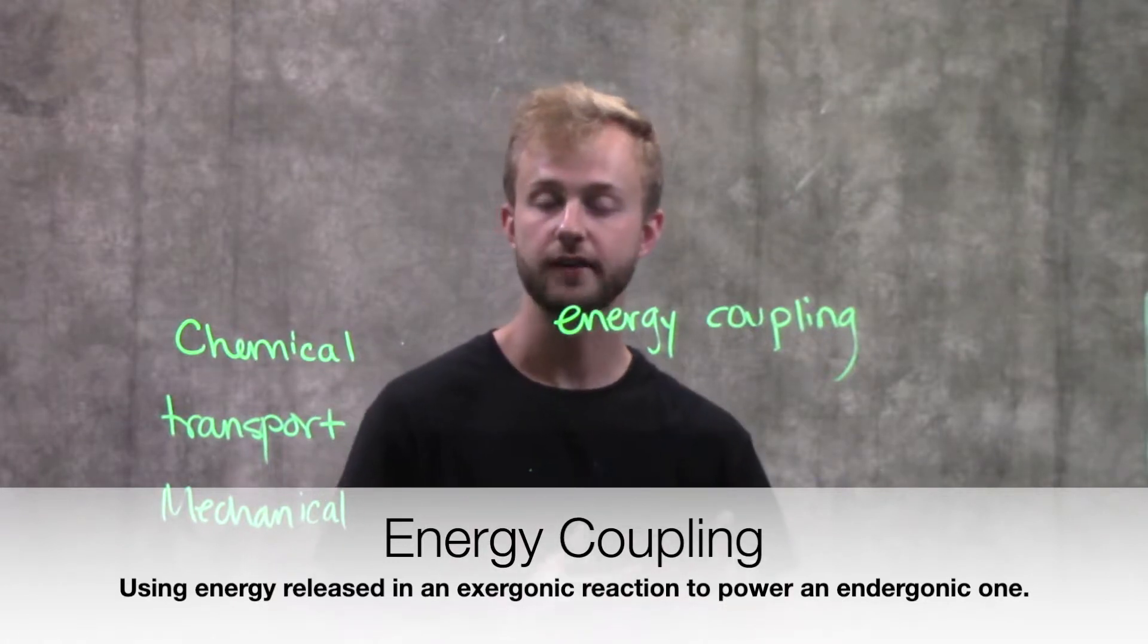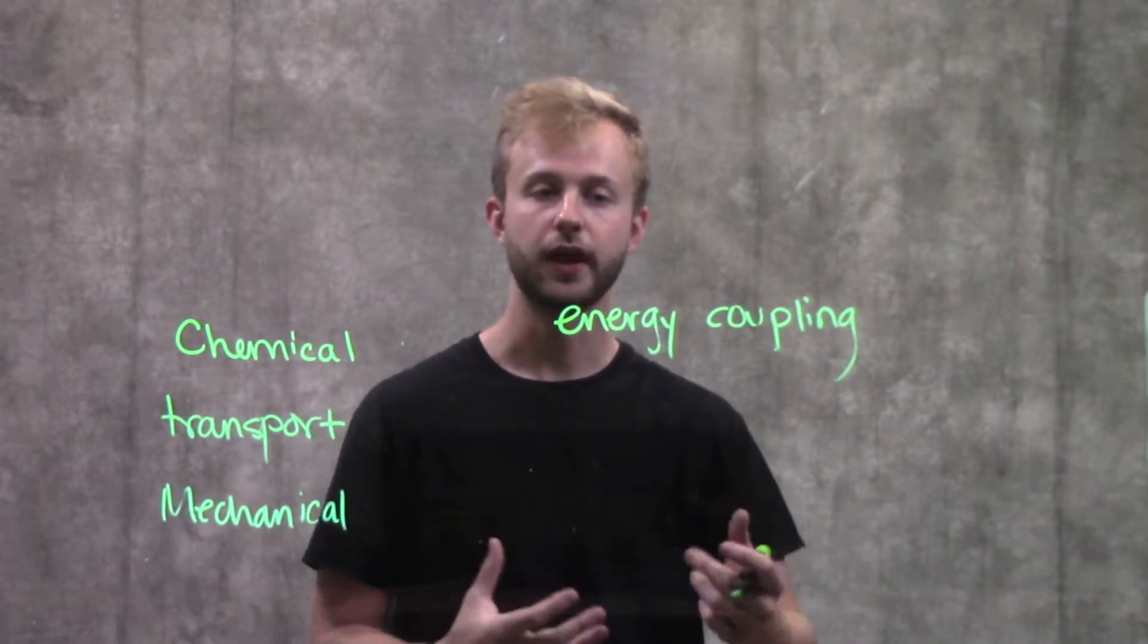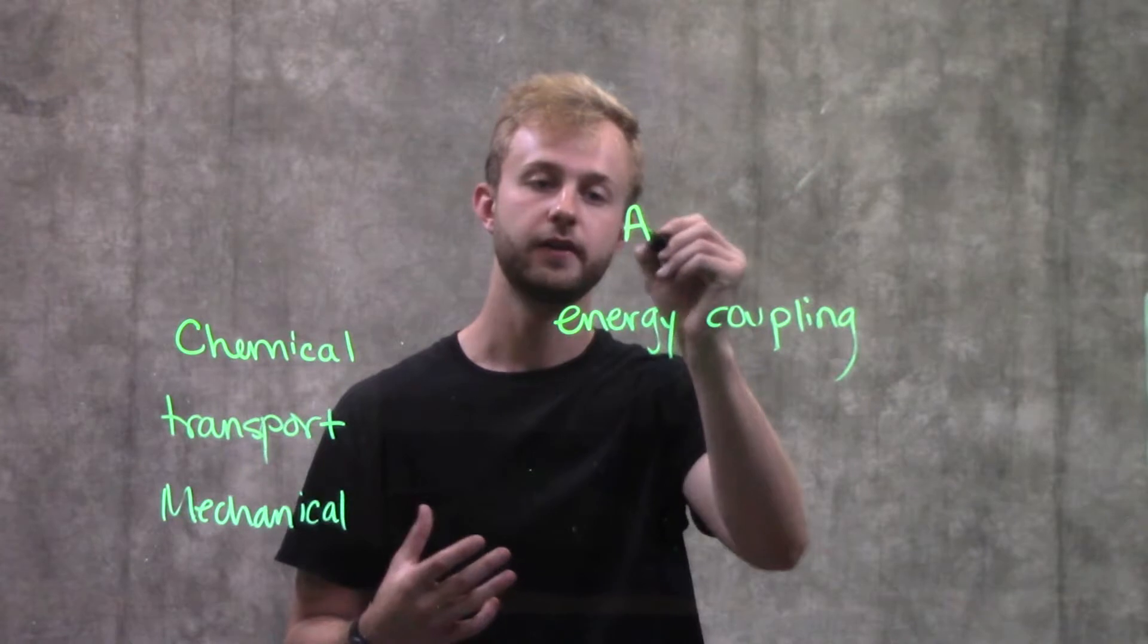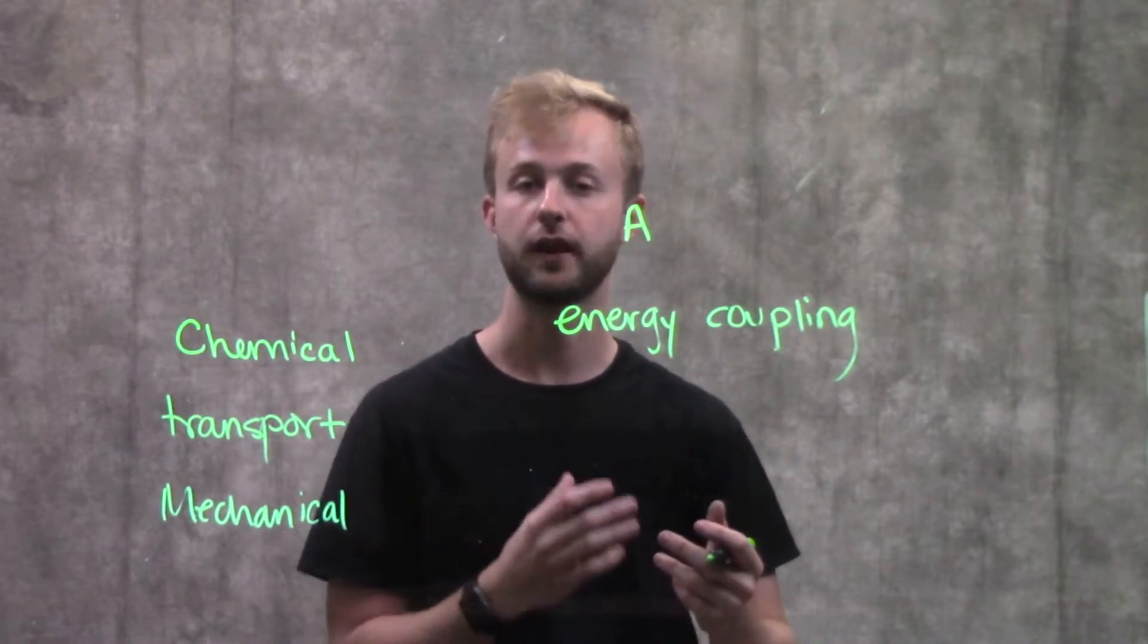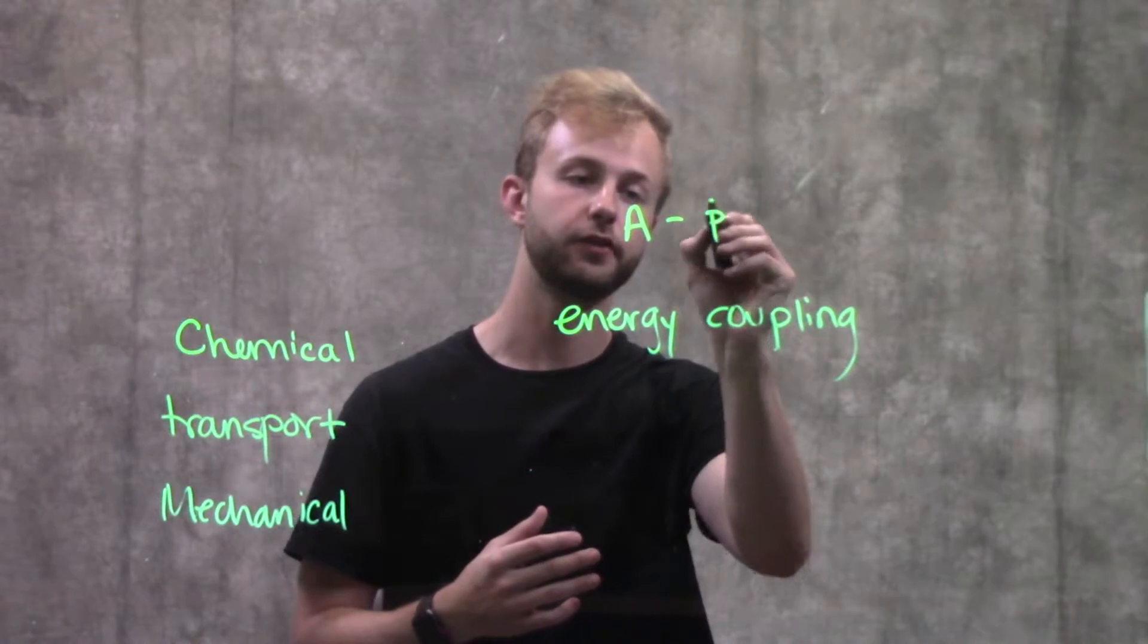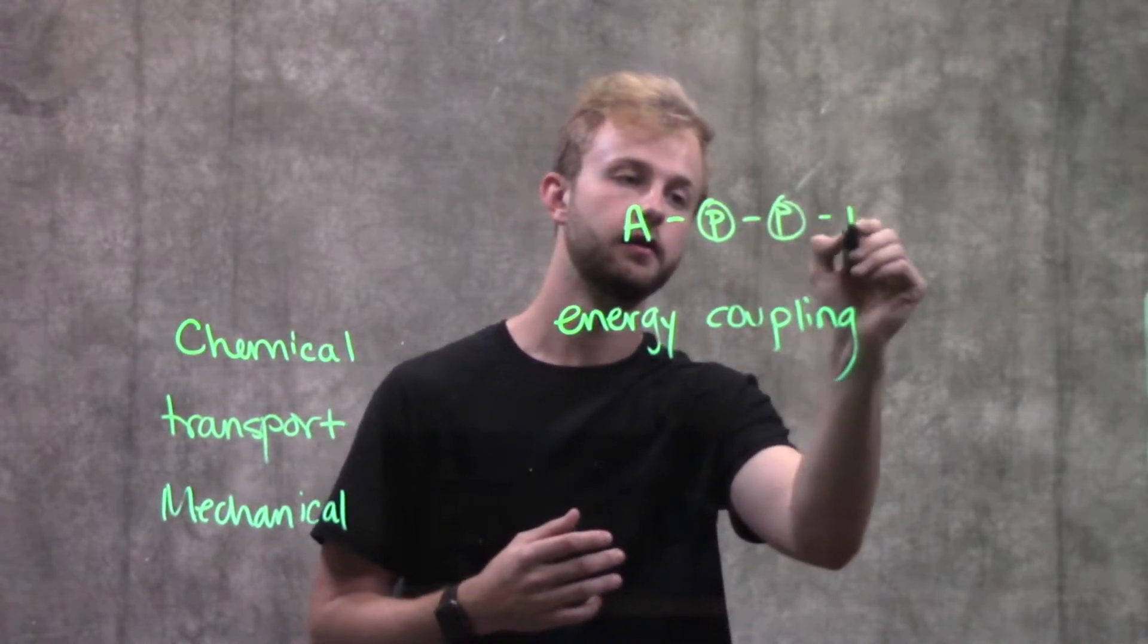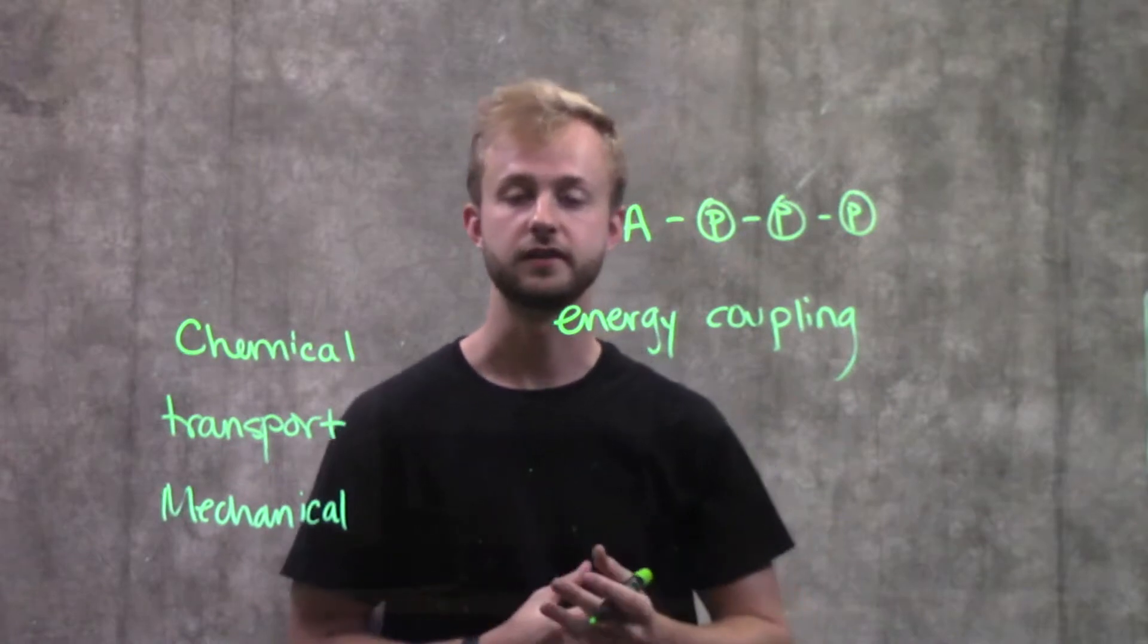In energy coupling, what's going to happen is we're going to hydrolyze a molecule of ATP. In every molecule of ATP, we have the adenosine, which is a nucleotide, and then the TP stands for triphosphate. So we're going to have three phosphate groups on the molecule of ATP.